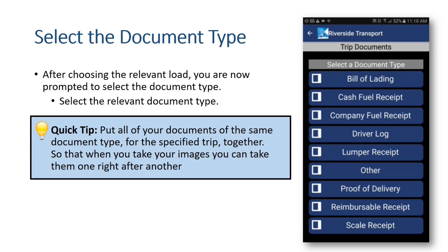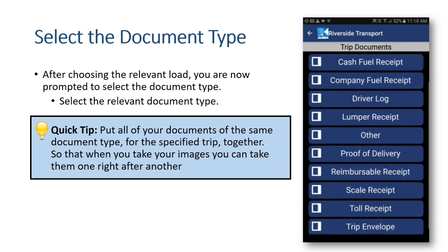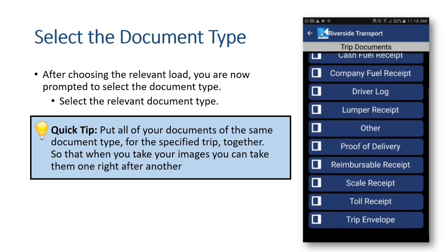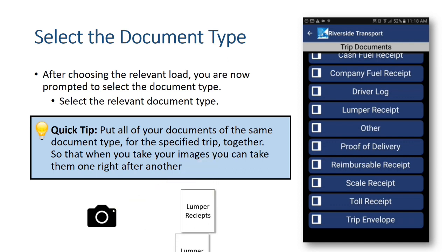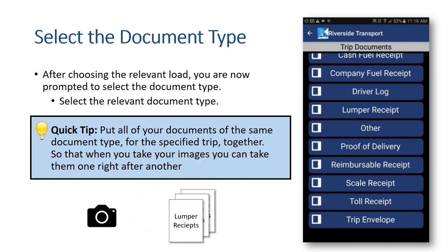After choosing the relevant load, you are now prompted to select the document type. Select the relevant document type. A quick tip is to put all of your documents in the same document type for the specified TRIP together, so that when you take your images you can take them one right after another.